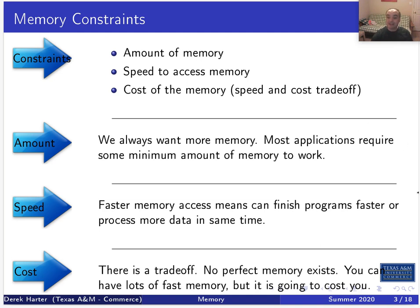We want the memory to be fast, because faster memory means we can finish our computations faster — or equivalently, we can process more data in the same amount of time. If we have a problem that's linear in time and we get memory that's twice as fast, we can either finish in half the time or do twice as much work in the same time. But there's a trade-off: different kinds of memory do cost money, and unfortunately getting really fast memory also costs more.